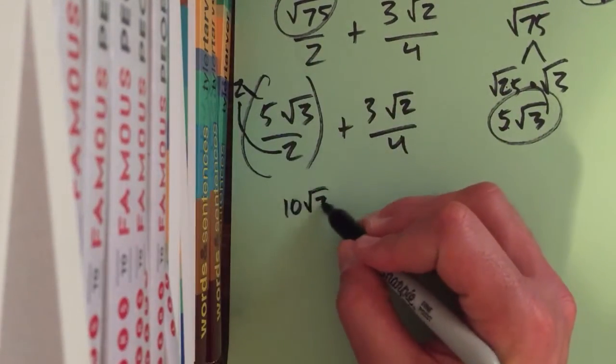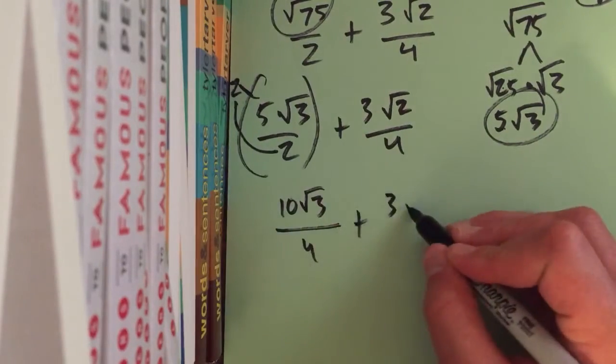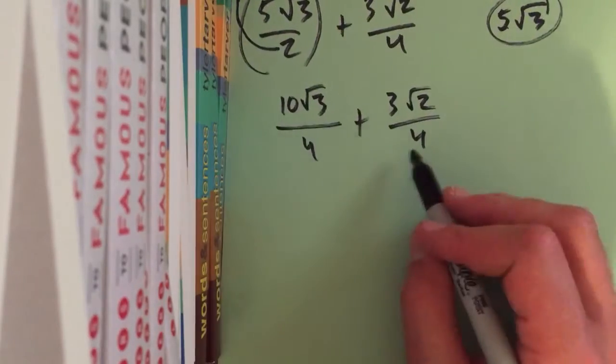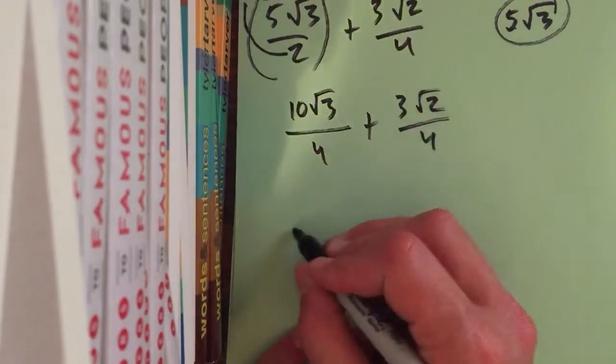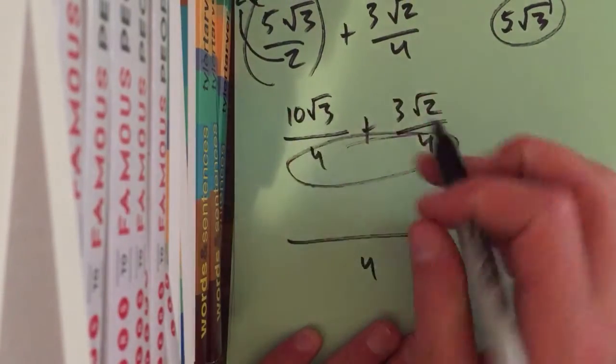So, that'd be 10 radical 3 over 4 plus 3 radical 2 over 4, and then we can combine them, okay? These can be combined. 4 can just be the bottom part, and then you would add the top parts, okay?